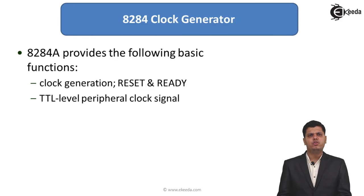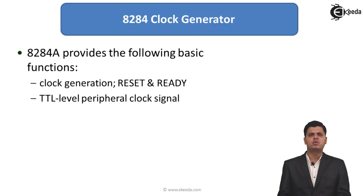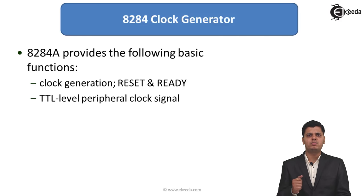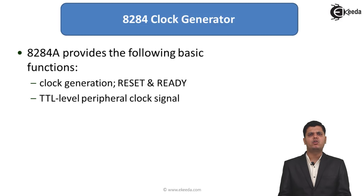The 8284A provides the following basic functions: it generates a clock which can be provided to the 8086, peripherals, or other microprocessor systems. Apart from that, it provides reset and ready signals for synchronizing the 8086 with memory. TTL level peripheral clock signals are also available from this 8284 clock generator.